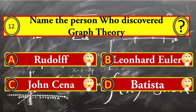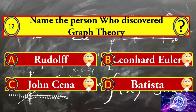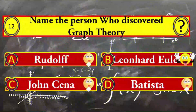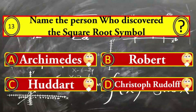Question number twelve: name the person who discovered graph theory and the square root symbol. Your options: A) Rodolph, B) Leonhard Euler, C) John Cena, and D) Batista. Leonhard Euler is the right answer.